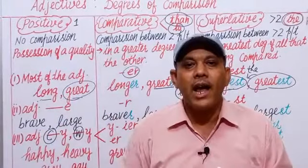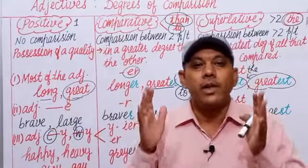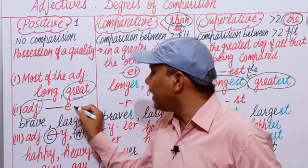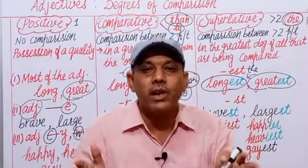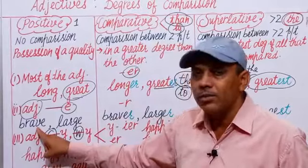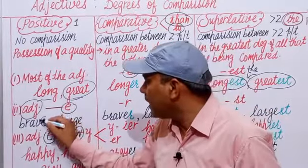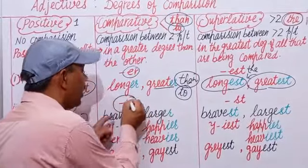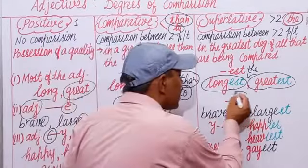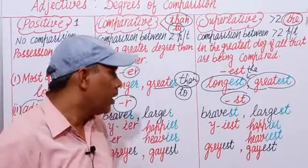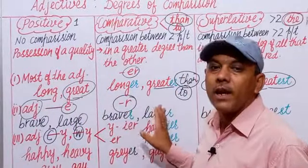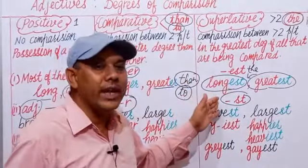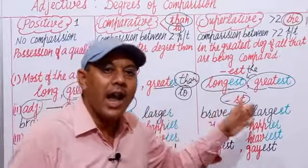Second rule: if an adjective ends in 'e,' we add only 'r' for comparative and 'st' for superlative — not 'er' and 'est.' For example: 'brave' becomes 'braver' and 'bravest'; 'large' becomes 'larger' and 'largest.' In this way, we change positive degree adjectives ending in 'e' into their comparative and superlative forms.